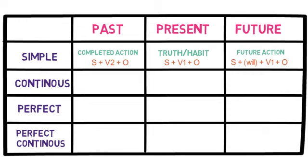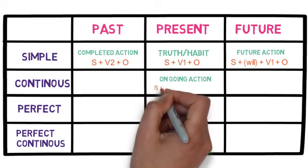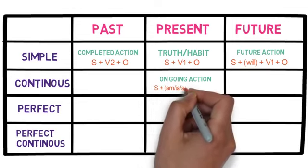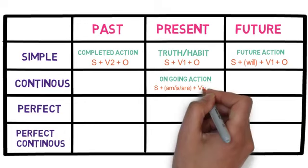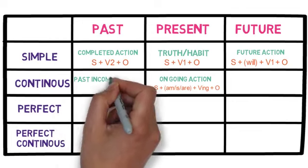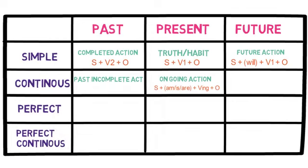In the present continuous tense, we refer to an ongoing activity. In the past continuous tense, we refer to a past incomplete activity until some another activity begins.